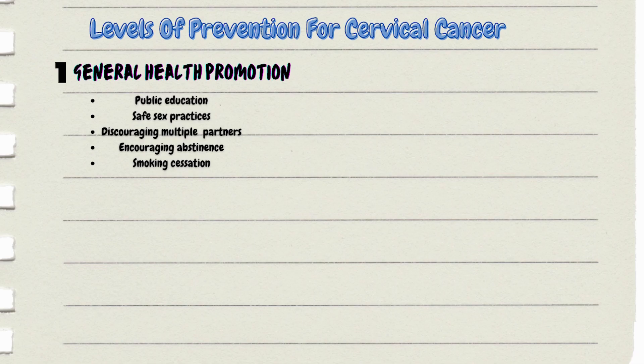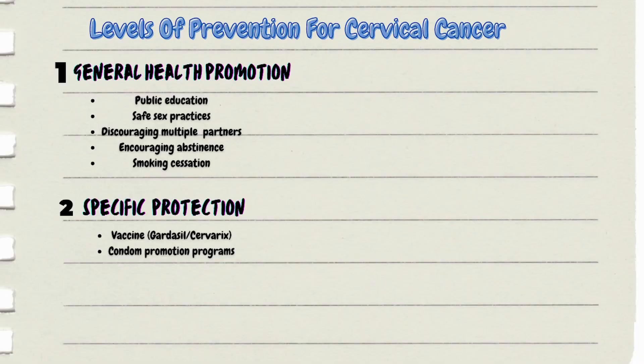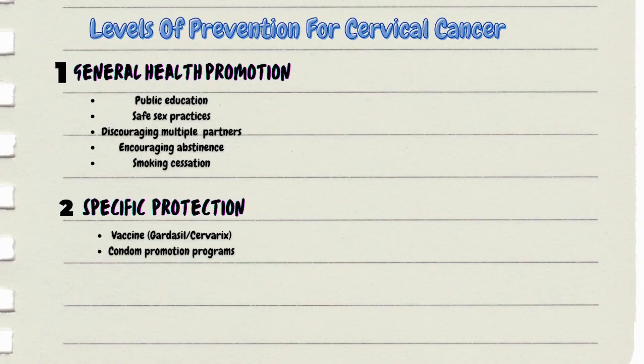You can also include smoking cessation since smoking is one of the risk factors, as our aim in general health promotion is to decrease risk factors. Under specific protection, the vaccine comes first. For cervical cancer there are two types: the Gardasil vaccine, which covers serotypes 6, 11, 16 and 18 — where 6 and 11 cause genital warts and 16 and 18 cause cervical cancer — and the Cervarix vaccine, which only covers serotypes 16 and 18. We can also include condom promotion programs.